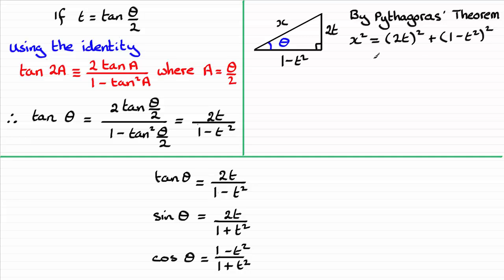So that's all of 2t squared plus 1 minus t squared all squared. And if we work this out, this comes to 4t squared plus, and then if we expand the bracket, 1 minus 2t squared plus t to the power 4.